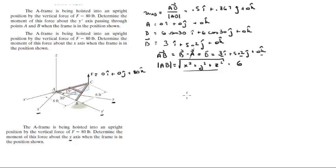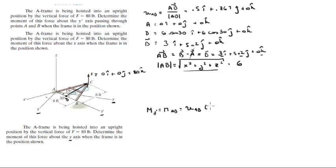Now that we have the unit vector, the moment along y-prime — which is the moment along AB — equals the unit vector AB times the vector DC cross F. Let's call this point right here point D, so we need the vector DC.